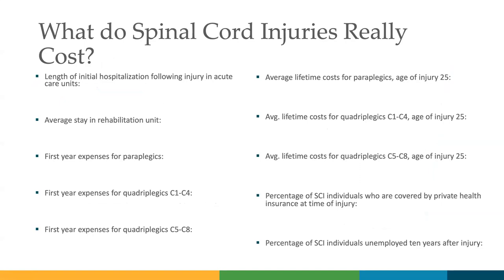Looking at costs after spinal cord injury — today we're talking about high tetras, high quads, C1 through C4. Length of initial hospitalization in acute care units is around 11 days; average days in rehab units is 31 days. That's not a lot of time to figure things out or get needed equipment. It's also not enough time to look at prognostic indicators for good equipment determinations. A C5 ASIA B injury at 40 days post-injury may look like a C5 ASIA D five months later, so the equipment needs may drastically change over that time.